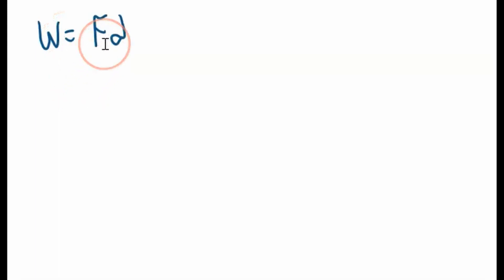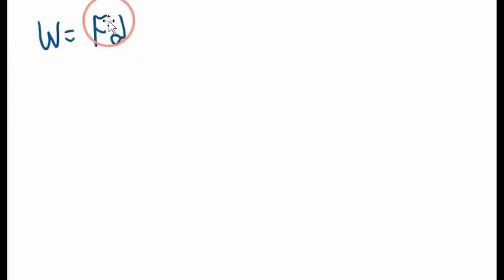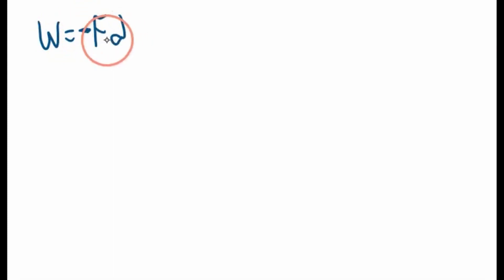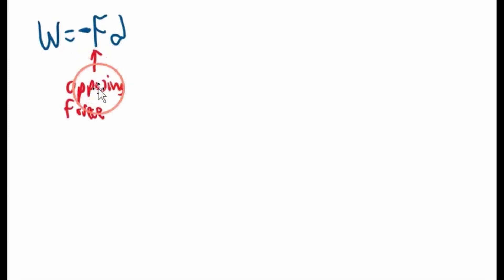Many people will say that work is force times distance. This is geared towards a general chemistry class, so no calculus in this video. Now, work equals force times distance is not totally correct — you've got to have the right sign. So work equals negative force times distance, because this force is the opposing force, not the force you're applying. This is very important if you want to get your signs right.